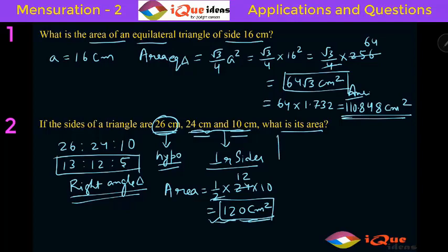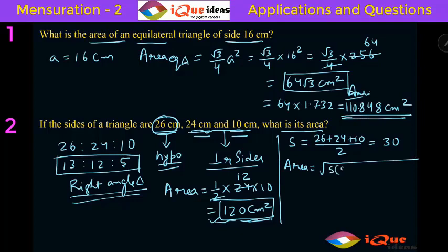The other method could be Heron's formula. Now for Heron's formula, we need the semi-perimeter. So S is equal to the sum of all the sides divided by 2. So it is 26 plus 24 plus 10 divided by 2. 26 plus 24 is 50, plus 10 is 60, by 2 that is 30. And the area formula is given as square root of S into S minus A into S minus B into S minus C.